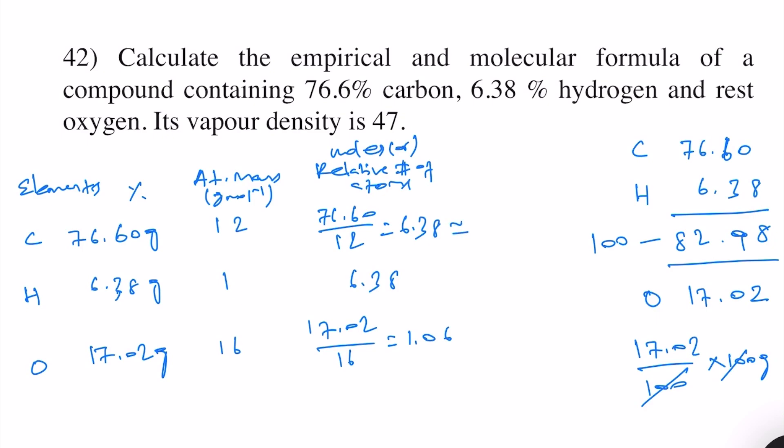This we can approximately take as 6 because it is not 6.5 or over 6.5, and therefore we can take this also approximately as 6. This one we can approximately take as 1, and then we need to find the simple ratio.